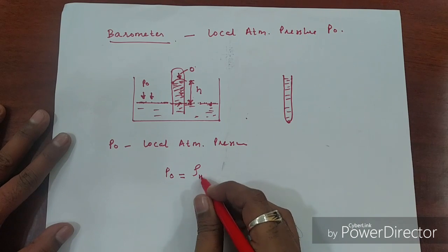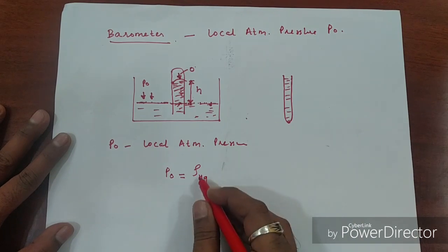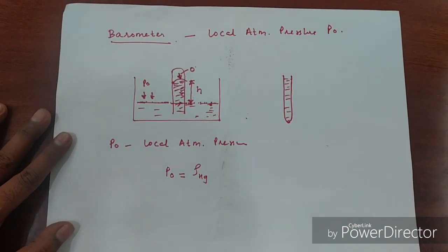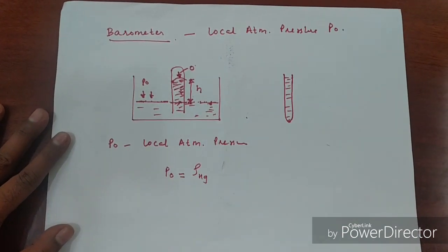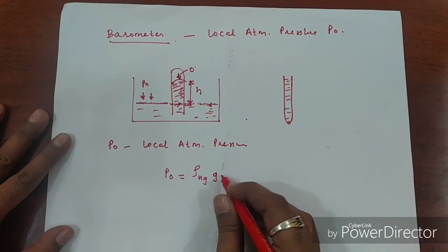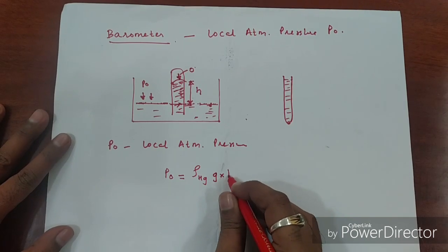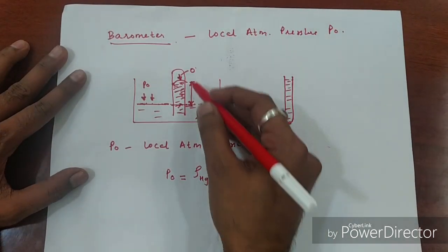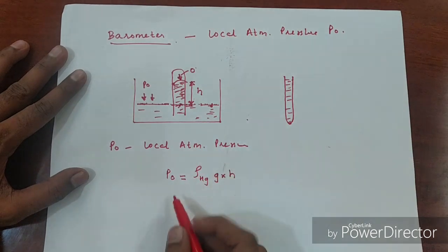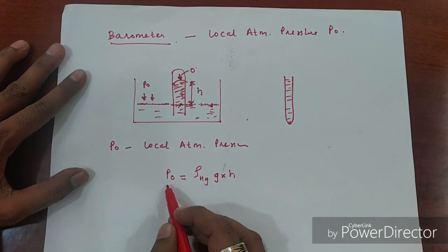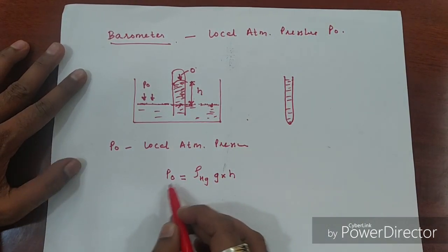The local atmospheric pressure is equal to rho_Hg, the mass density of mercury, multiplied by g, multiplied by h. So when you measure the height h in the tube, you can calculate the local atmospheric pressure.